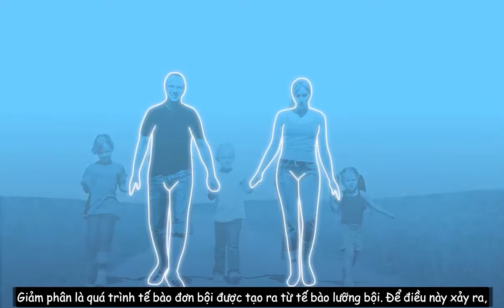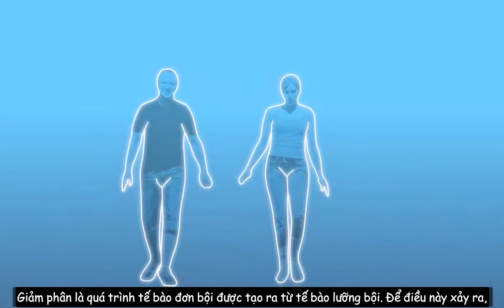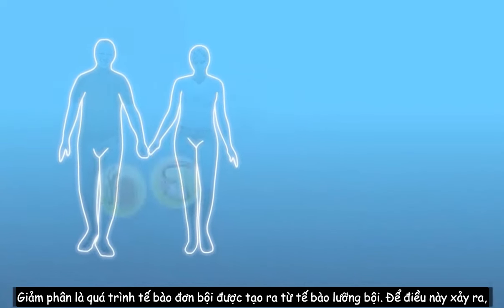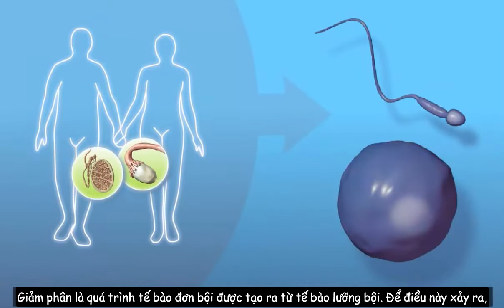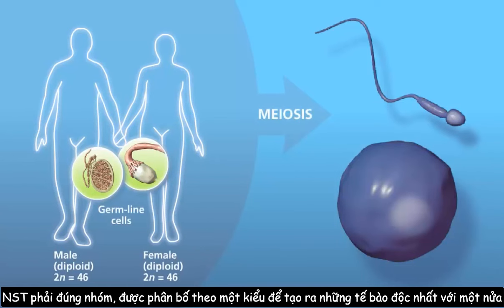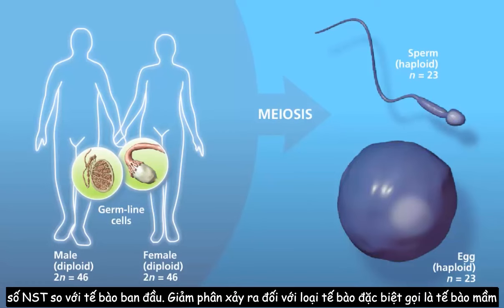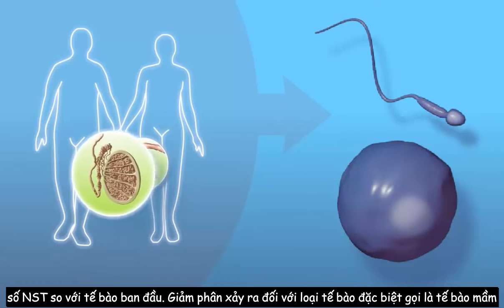Meiosis is the process by which haploid cells are produced from a diploid cell. For this to occur, the chromosomes must be correctly sorted and distributed in a manner to create genetically unique cells with half the number of chromosomes as the original cell.